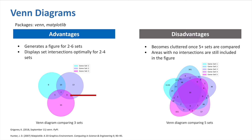We can see here that we have a Venn diagram comparing 3 sets and another Venn diagram comparing 5 sets. The Venn diagram comparing 5 sets is a lot more cluttered and it's not as easy to interpret the overlaps of the sets. Another disadvantage we can see in the 3-set Venn diagram is that areas that don't have any intersection are still included in the diagram, which isn't always useful information.